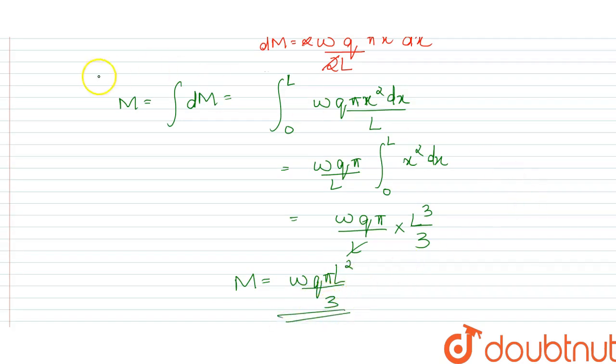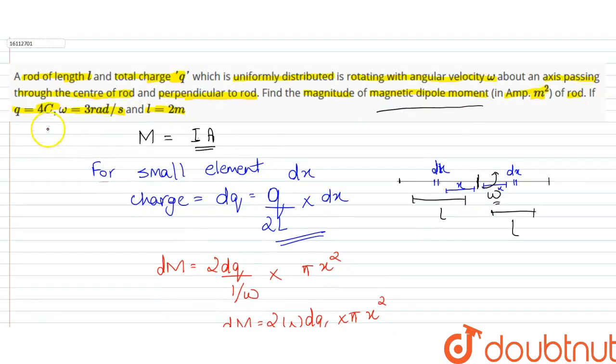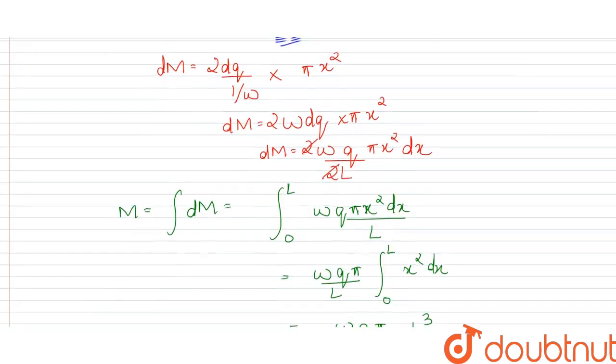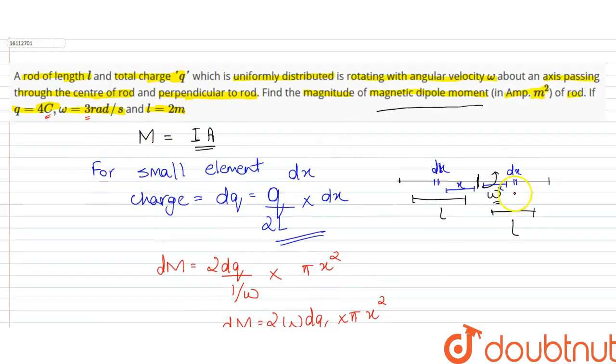So this is our magnetic moment. We will put values. We have all values: Q is 4, omega is 3, and L is 2. But L here is 1, because our total rod length was 2 meters and we took half of it, so it is 1.